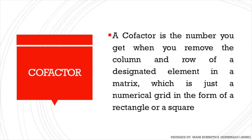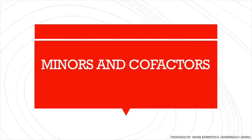Cofactor. A cofactor is the number you get when you remove the column and row of a designated element in a matrix, which is just a numerical grid in the form of a rectangle or a square. So the difference between the cofactor and minor is that they are actually the same — it's just that the cofactor is a signed minor.